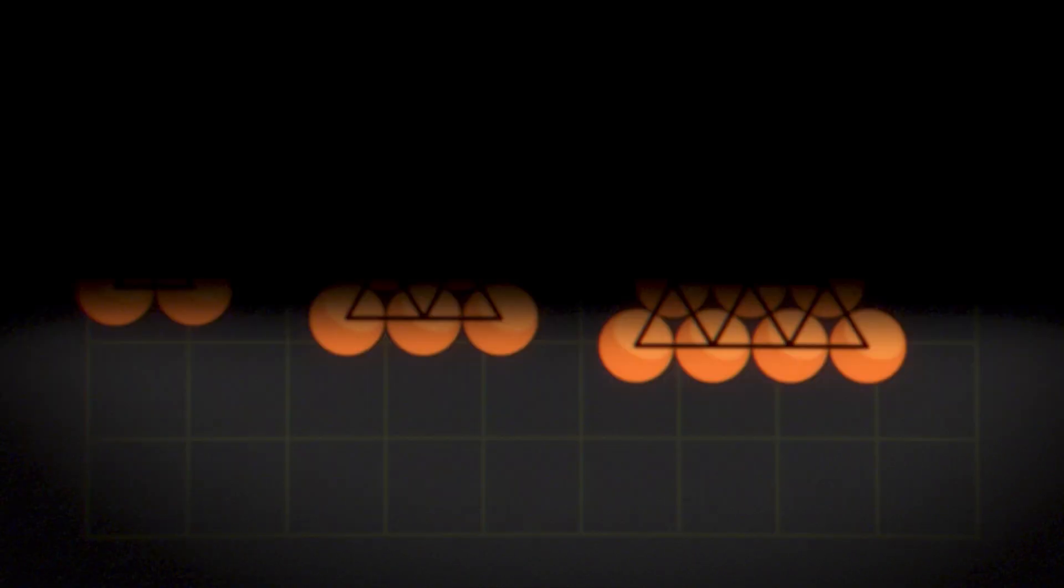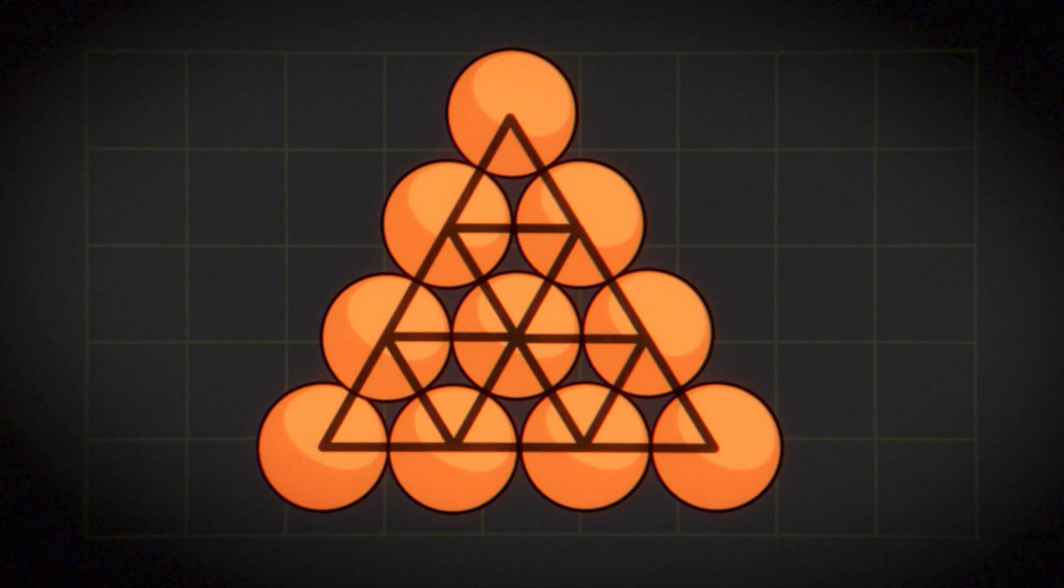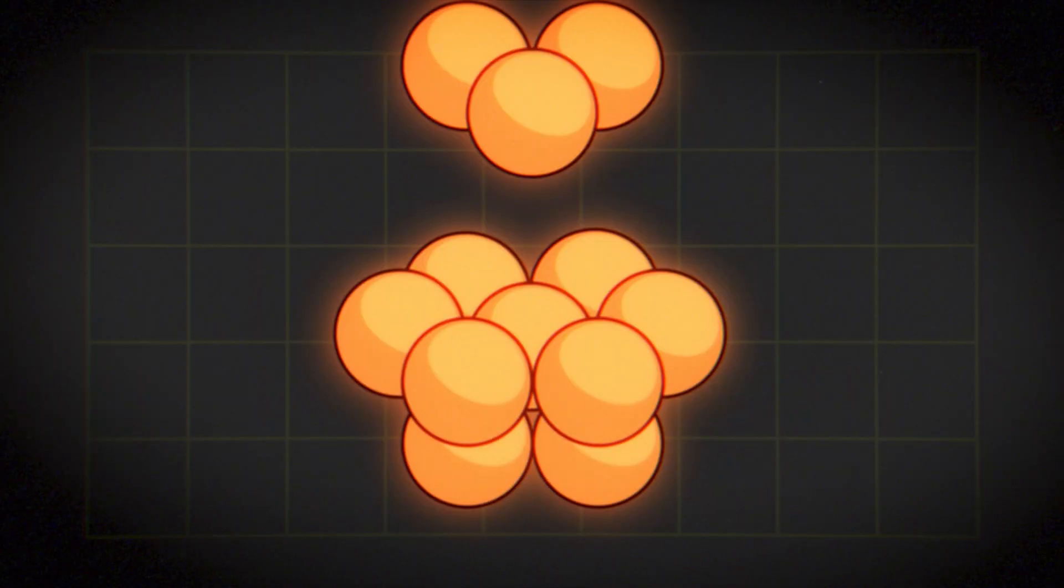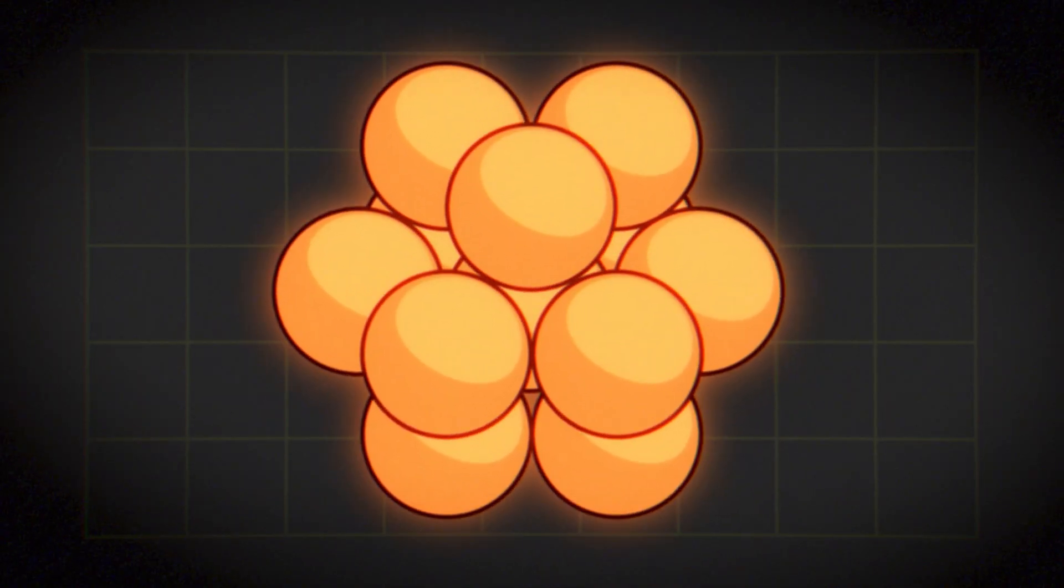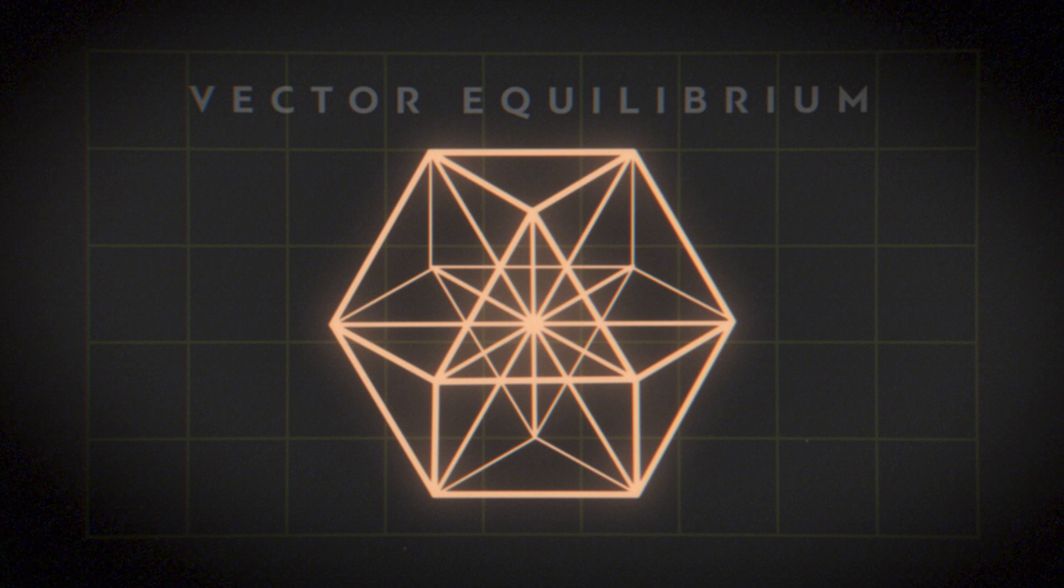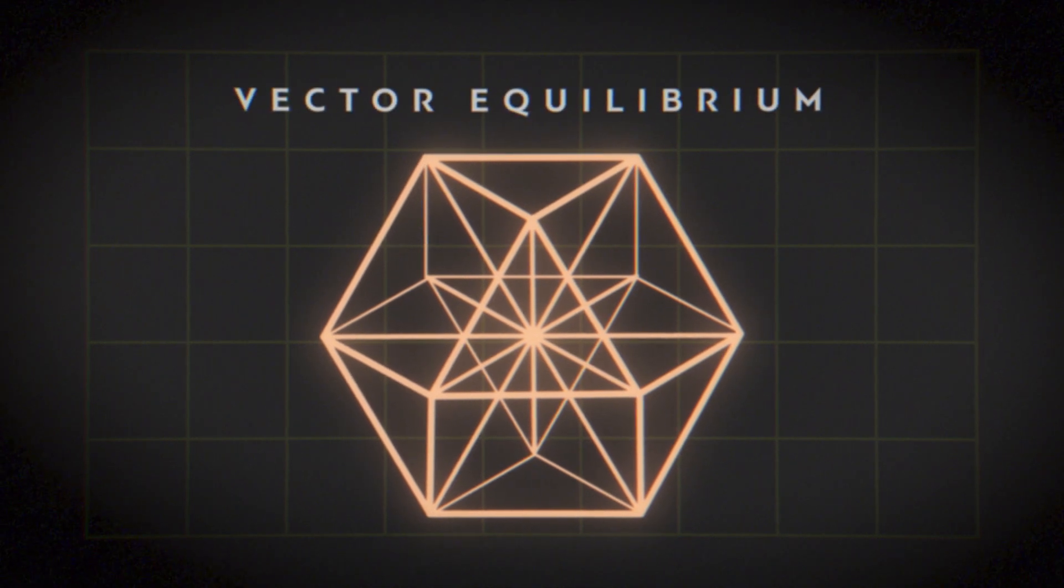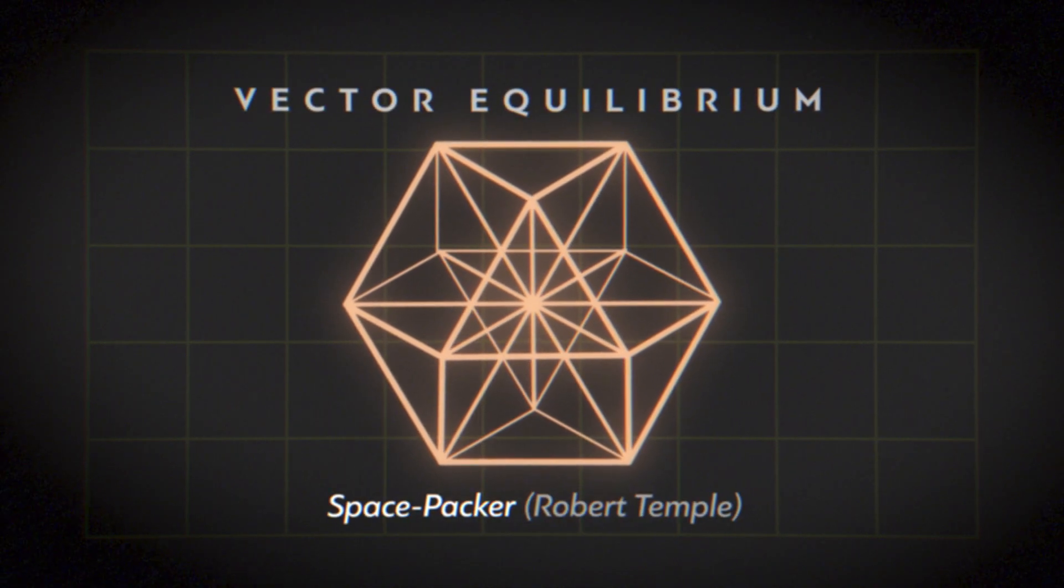Fuller was particularly interested in how nature employs the most efficient ways to structure matter and energy, which led him to the discovery of a shape he called the vector equilibrium, also termed space packer by Robert Temple.